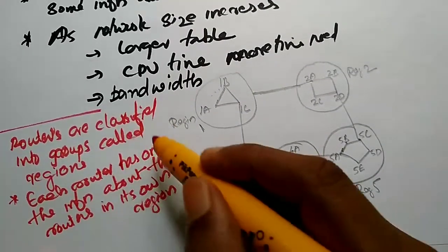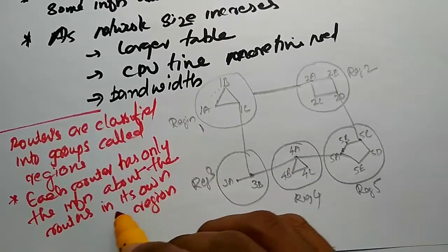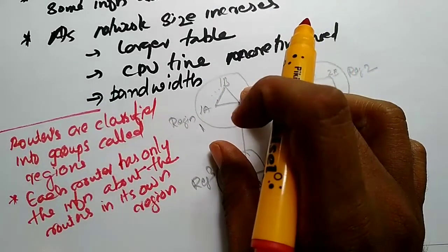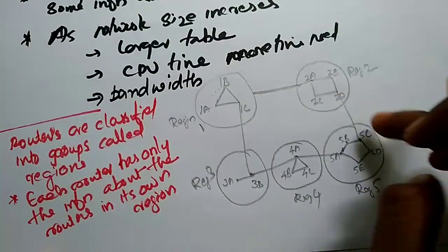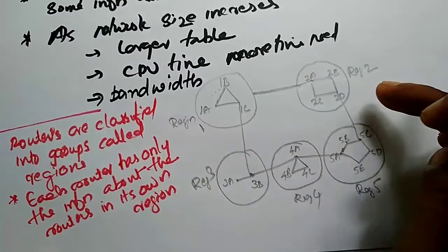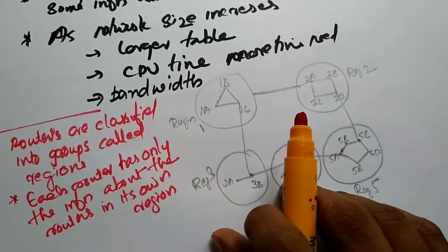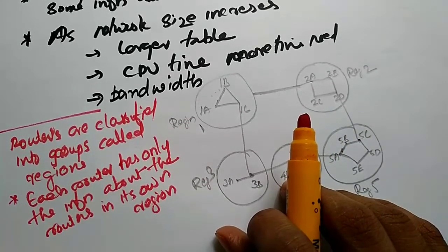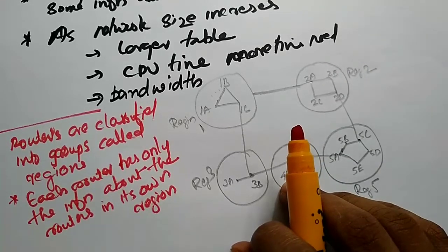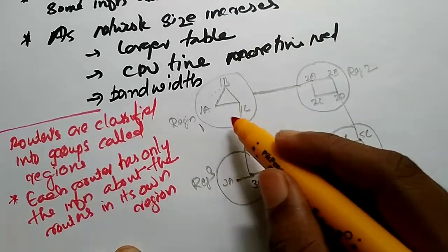A region is divided into sub-regions. Each router has only the information about the routers in its own region. For example, in region 1, a router also has information about routers in region 2 and region 3, but only at a summary level.